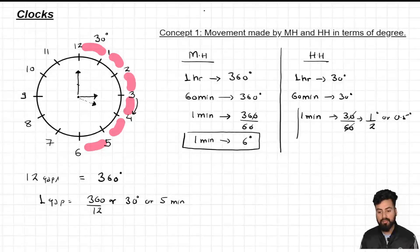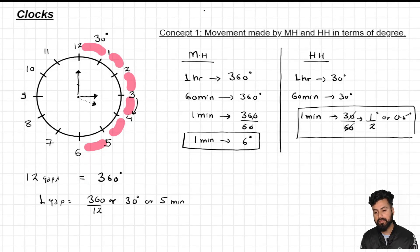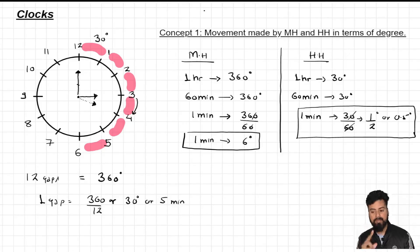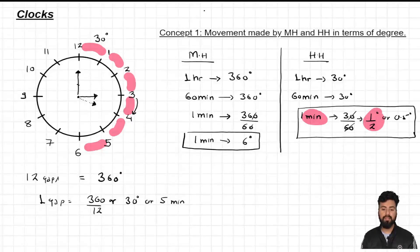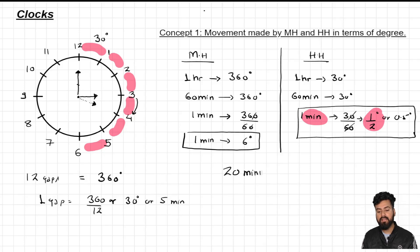This is something we are going to use in our first type of problem. To see the application, if someone asks what is the total movement made by the hour hand in 20 minutes, we use this learning: in one minute the hour hand moves by half a degree, so in 20 minutes it moves half of 20, which is 10 degrees.